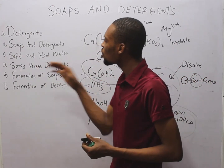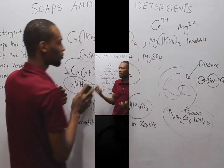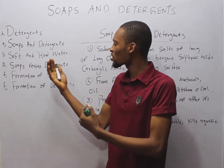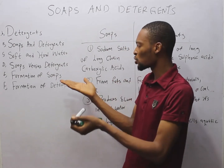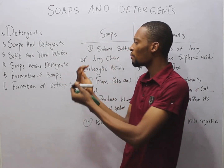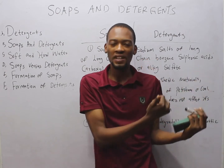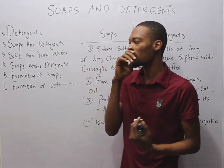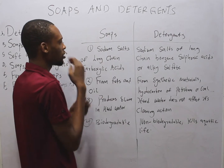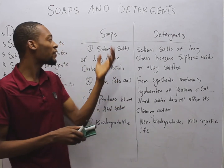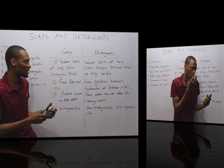Now, soaps vs. detergents. Let's see their comparison, advantages and disadvantages. The first point: soaps are formed from sodium salts of long-chain carboxylic acids.